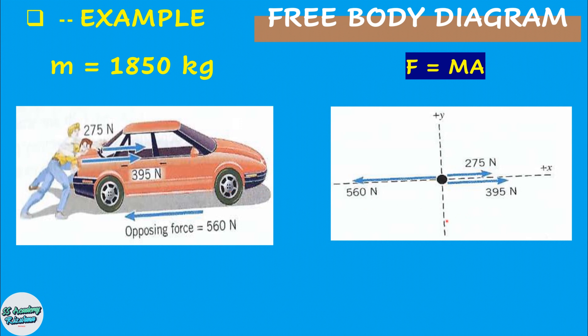This picture illustrates the use of a free body diagram. Here two people are pushing a stalled car. The mass of the car is 1850 kg. One person applies a force of 275 Newton to the car while the other applies a force of 395 Newton towards right hand side. Both forces act in the same direction.